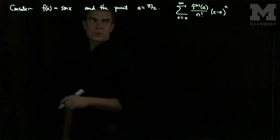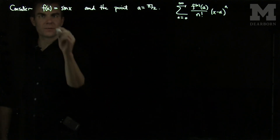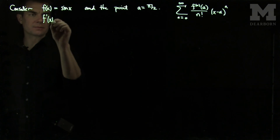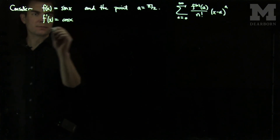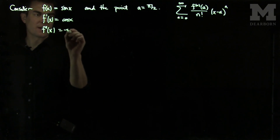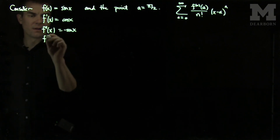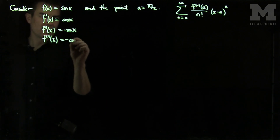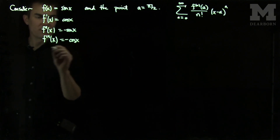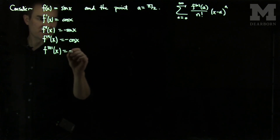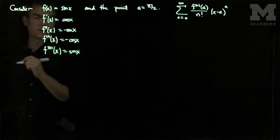What we need to do is find a pattern for the derivatives of this function. If f is sine, then f prime is cosine. The derivative of cosine is negative sine. The derivative of negative sine is negative cosine. And the derivative of negative cosine is sine. So after four derivatives, the cycle repeats.